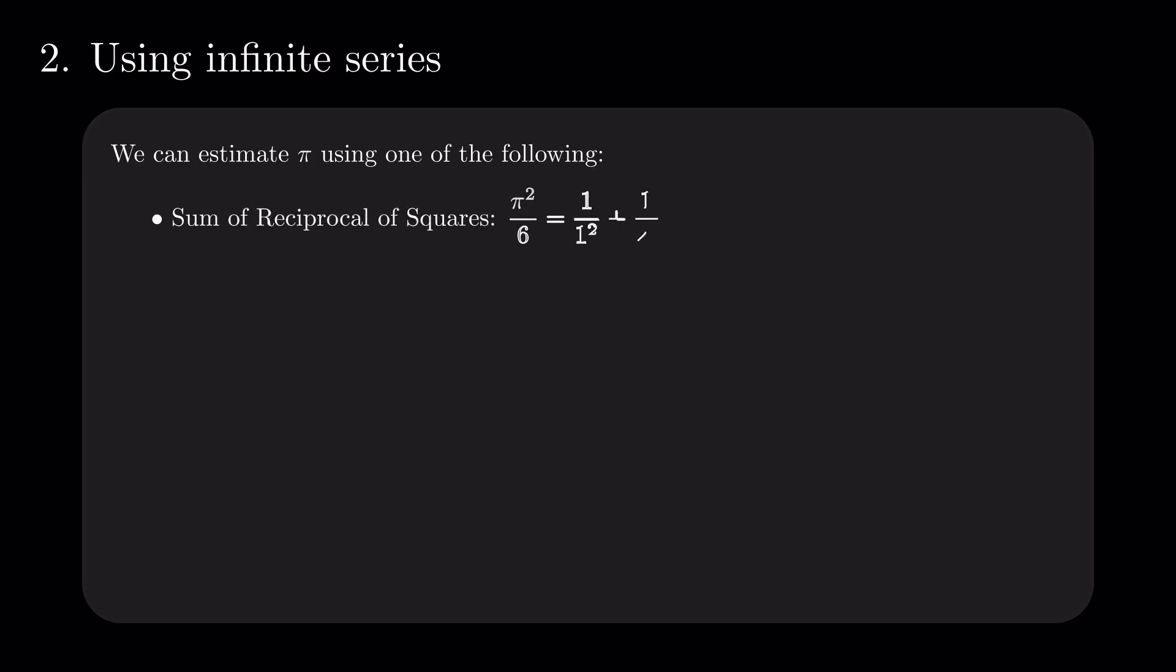You might provide different solutions, depending on the infinite series you remember. The sum of reciprocal squares, the sum of 1 divided by n squared for n taking positive integer values, equals pi squared divided by 6. Leibniz, the alternating sum of reciprocals of odd numbers equals pi divided by 4.